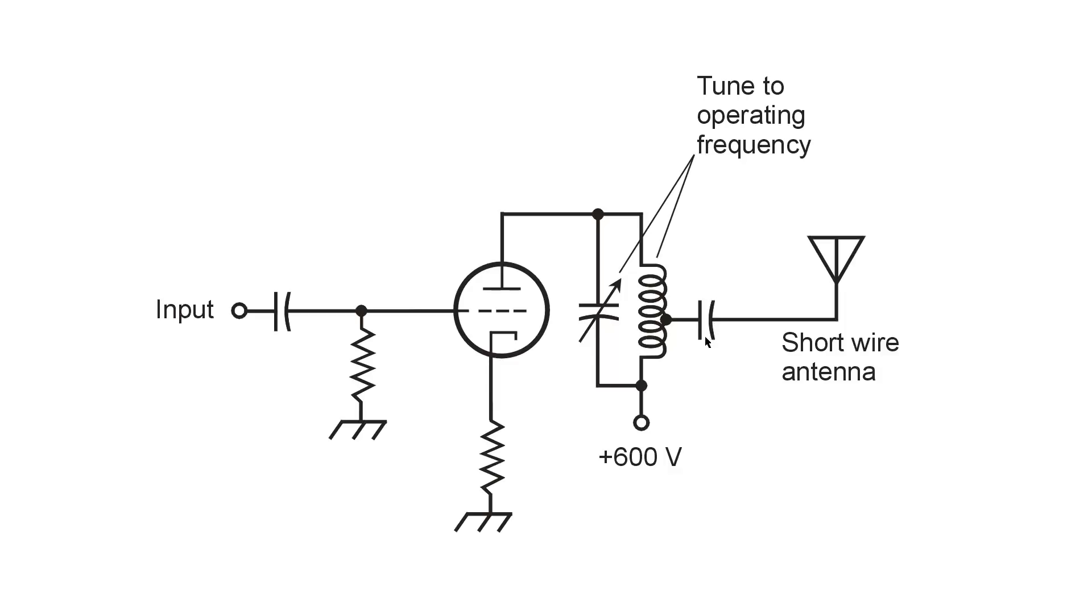The same is true for this capacitor, 0.001 microfarads or 1000 picofarads. So these are blocking capacitors that keep direct current from this circuit here, which is quite high, as you can see.